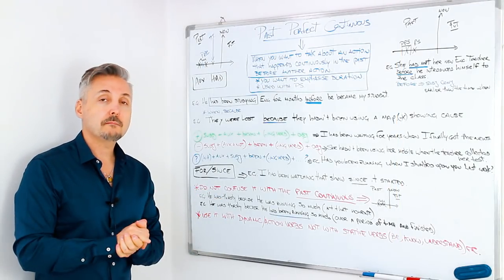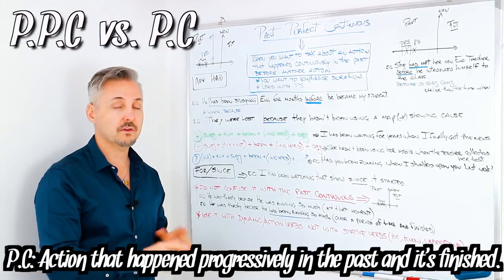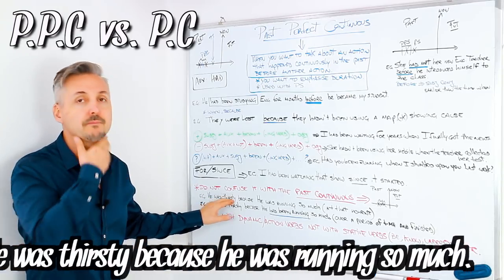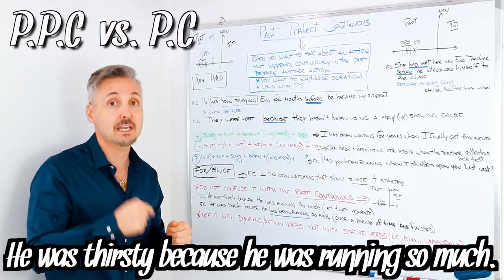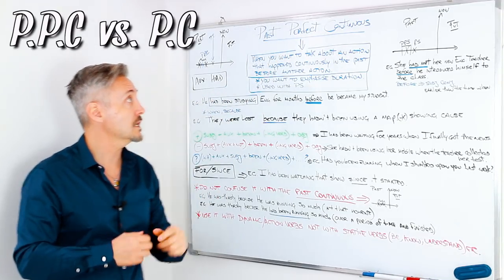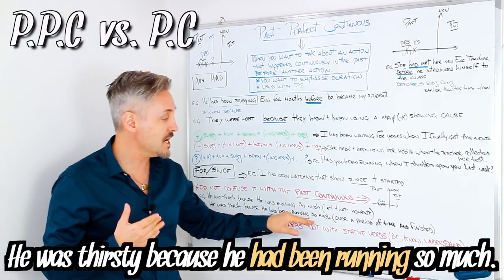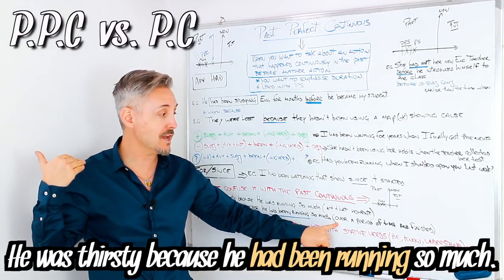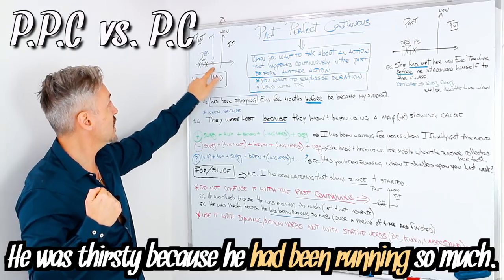Do not confuse the Past Perfect Continuous with the Past Continuous. The Past Continuous is an action that happened progressively in the past and is finished — there is no comparison with another past. For example: 'He was thirsty because he was running so much' — he was running and thirsty at the same moment. Instead, with the Past Perfect Continuous, the meaning changes: 'He was thirsty because he had been running so much' — he had been running over a period of time in the past, it's finished, and he was thirsty right after.